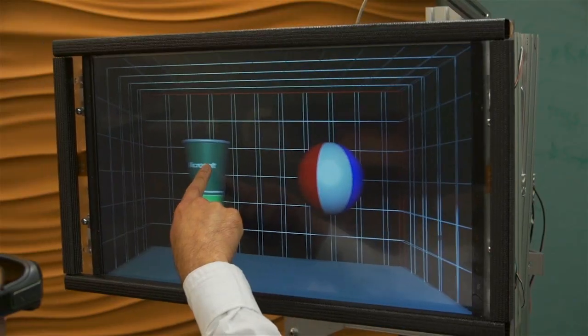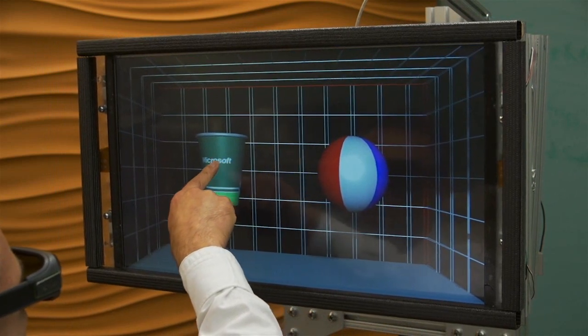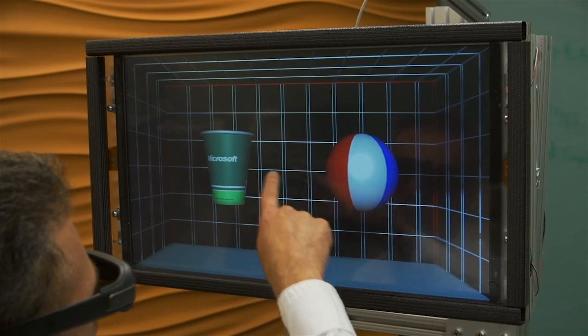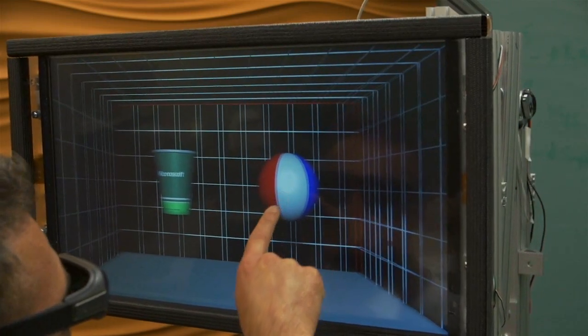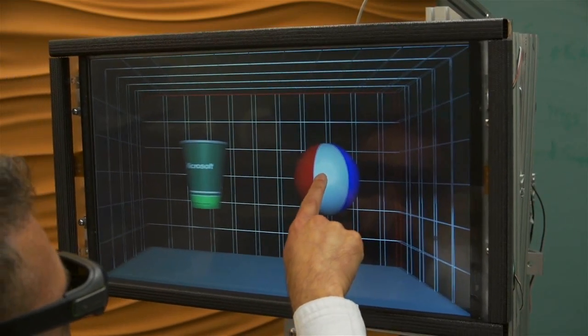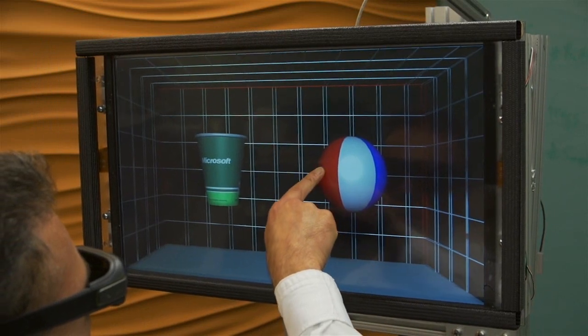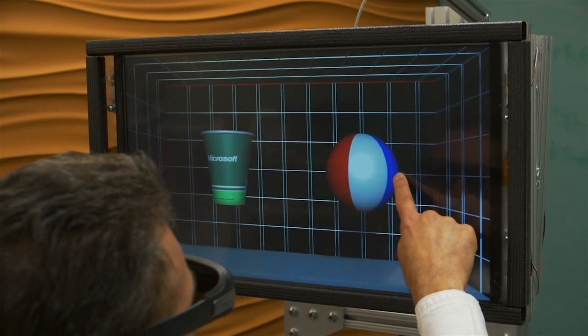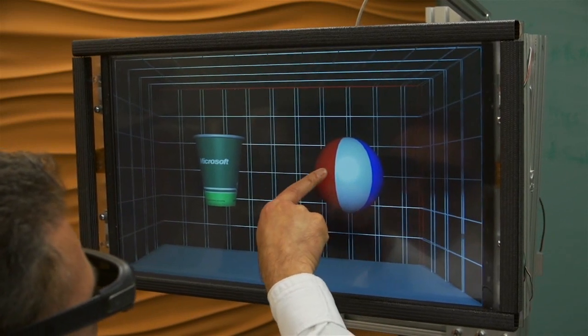We also explored feeling the contours of a 3D object. Here the display is adjusting position based on the depth of the object. For instance, the display is closer to the user when the finger is at the center of the ball and further away when on the side.